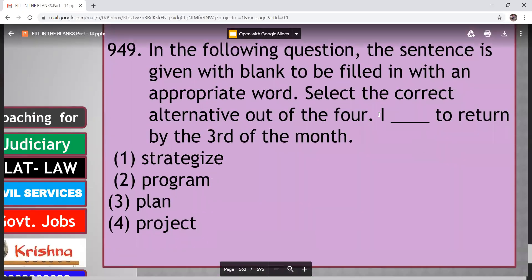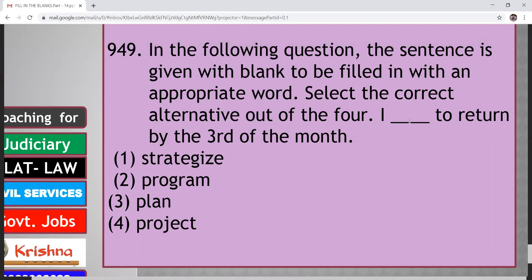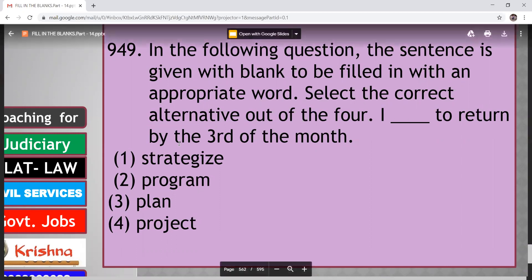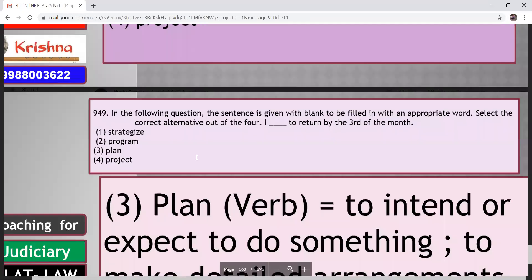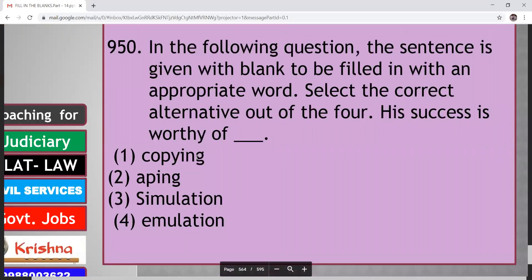I dash to return by the third of this month. Strategize, program, plan, project. So here your answer is plan. Third option. I plan to return by the third of the month. Next. His success is worthy of dash. Copying, applying, simulation, emulation. So here your answer will be emulation. That is effort to match or surpass a personal achievement. His success is worthy of emulation.